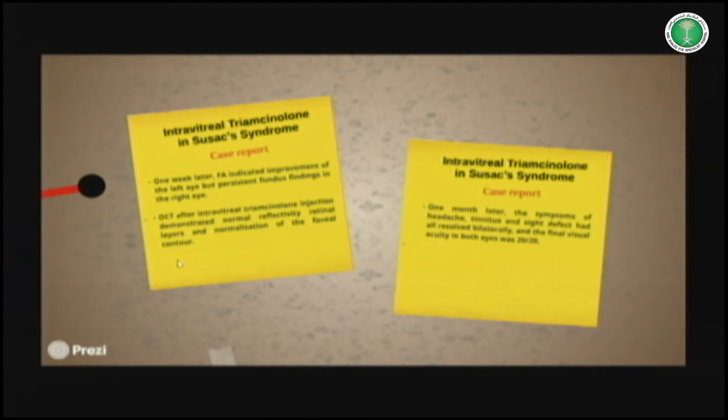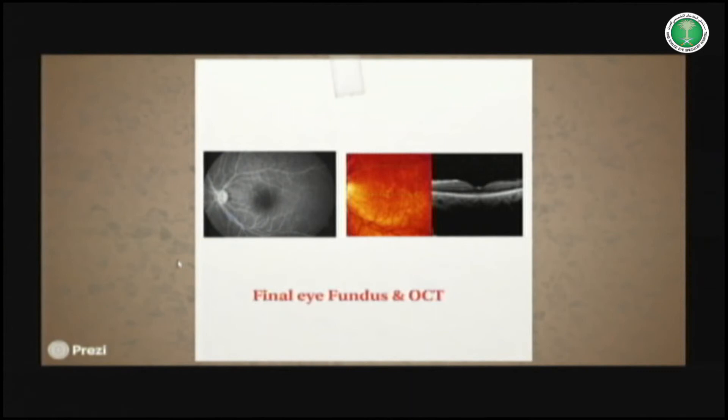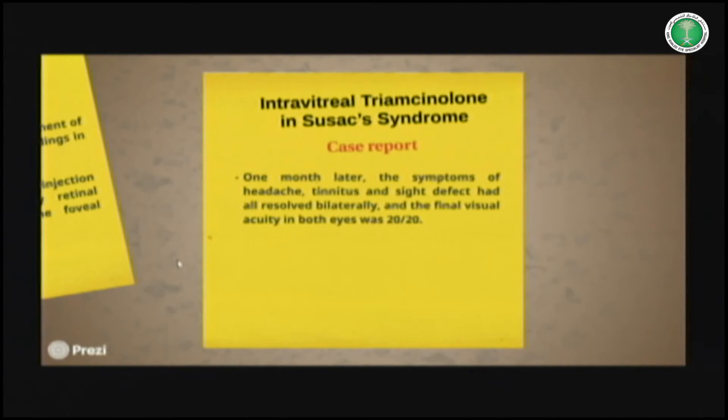One week after the injection, the fluorescein angiography showed that all the ischemic process disappeared, and the OCT also showed that the macula had improved. One week after the intravitreal injection, the patient received systemic treatment, and one month after, all the symptoms — headache and tinnitus — disappeared and improved.